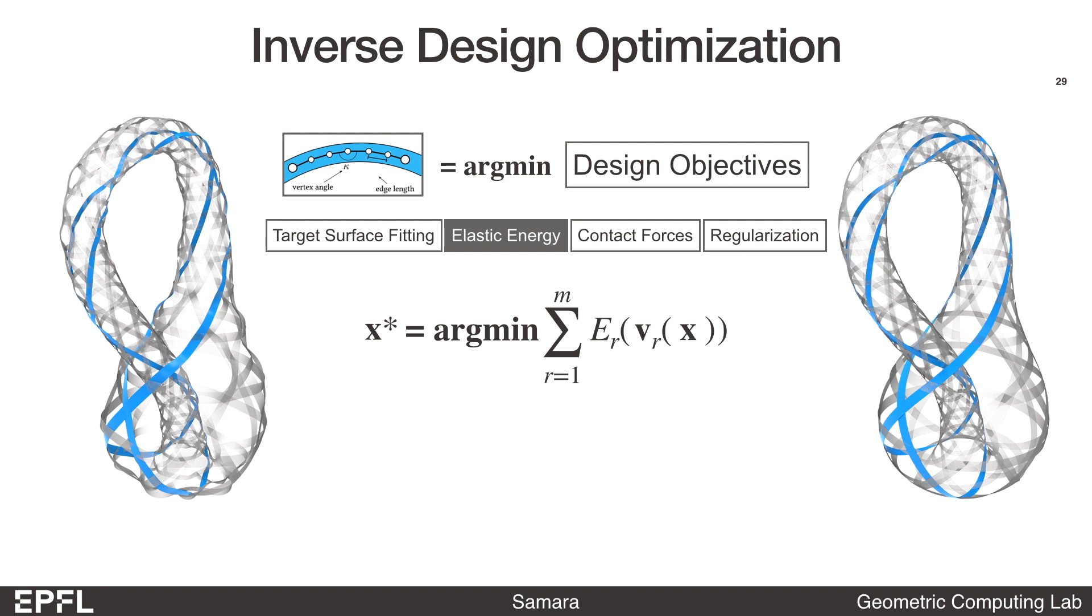We have discussed the elastic energy in the equilibrium problem. Previously, the length and curvature of the elastic rods are constant, but now the equilibrium state x star will be a function of these design parameters.